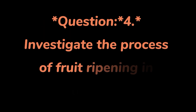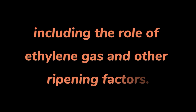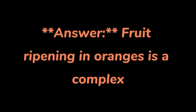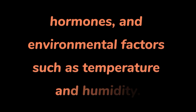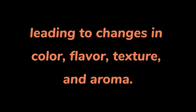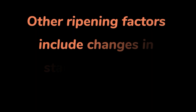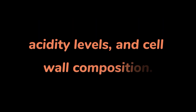Question 4: Investigate the process of fruit ripening in oranges, including the role of ethylene gas and other ripening factors. Answer. Fruit ripening in oranges is a complex physiological process regulated by ethylene gas, hormones, and environmental factors such as temperature and humidity. Ethylene gas triggers the expression of ripening-related genes, leading to changes in color, flavor, texture, and aroma. Other ripening factors include changes in starch and sugar content, acidity levels, and cell wall composition.